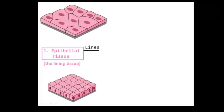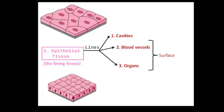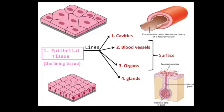First is the epithelial tissue or the lining tissue because it lines the cavities and surfaces of blood vessels and organs throughout the body, and also all the glands are made up of epithelial cells.